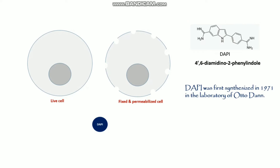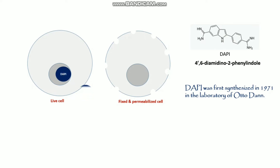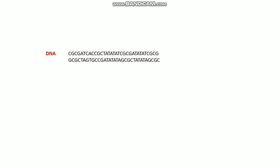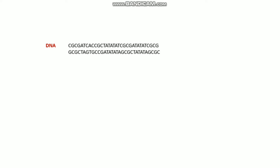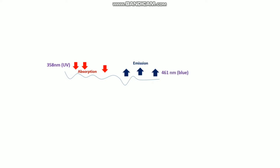DAPI can pass through an intact cell membrane, so it can be used to stain both live and fixed cells, though it passes through the membrane less efficiently in live cells. The permeability of DAPI is higher in fixed and permeabilized cells. DAPI binds preferentially to DNA minor groove in the AT-rich region.